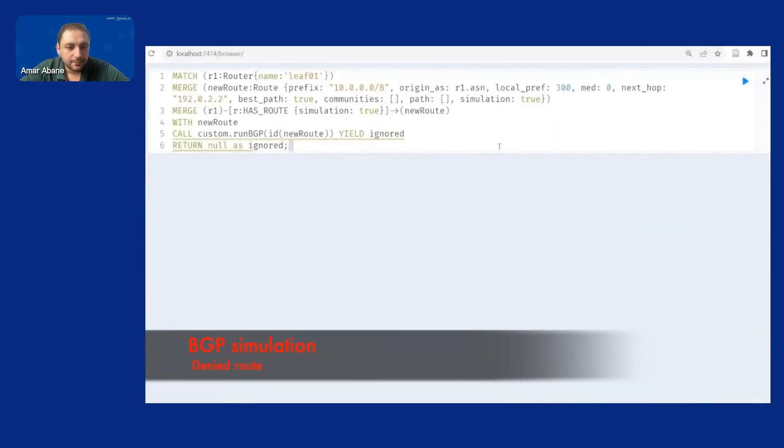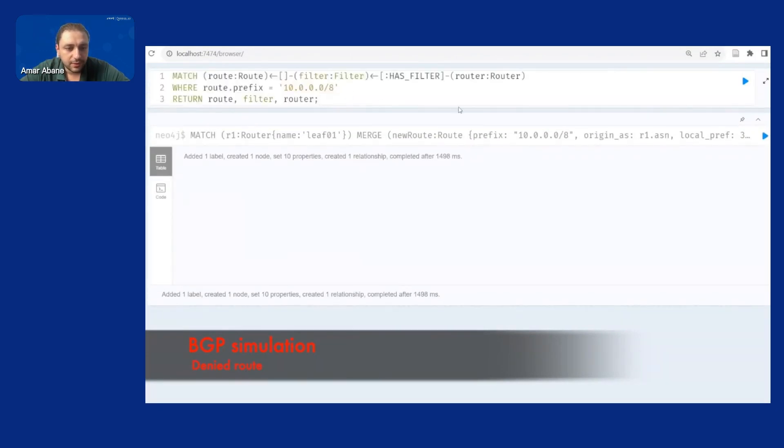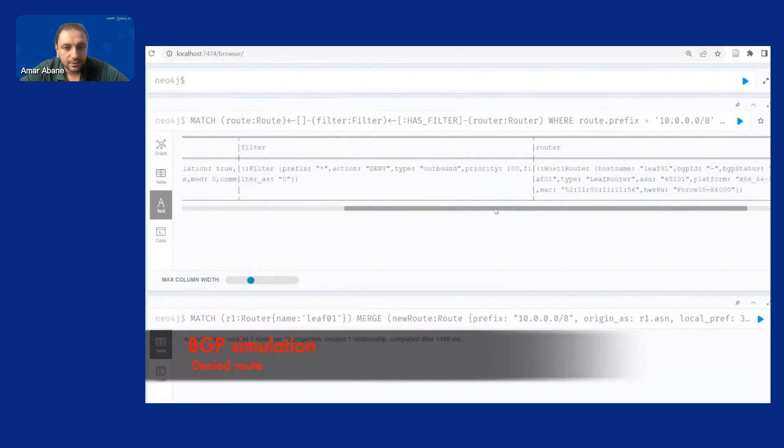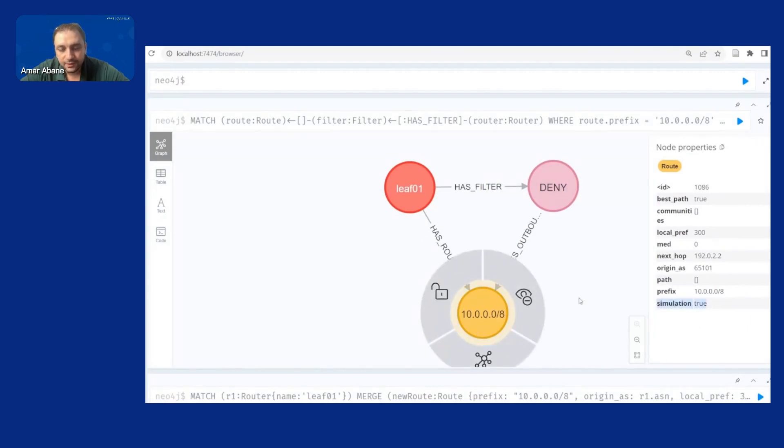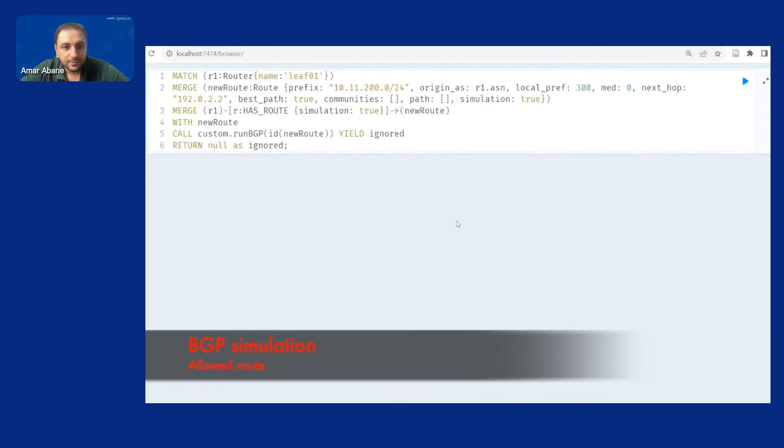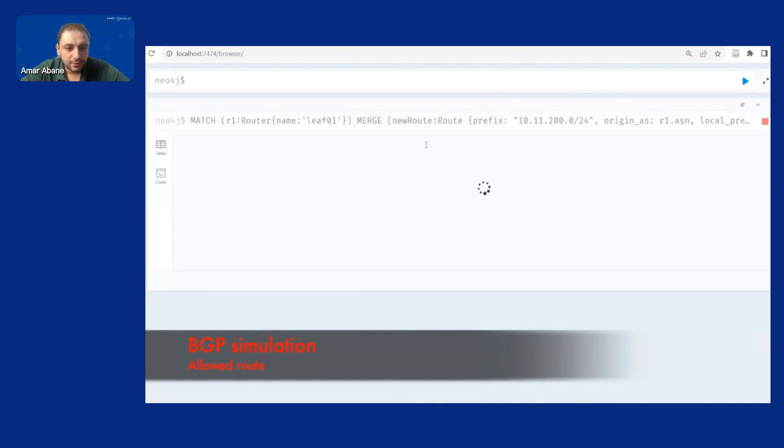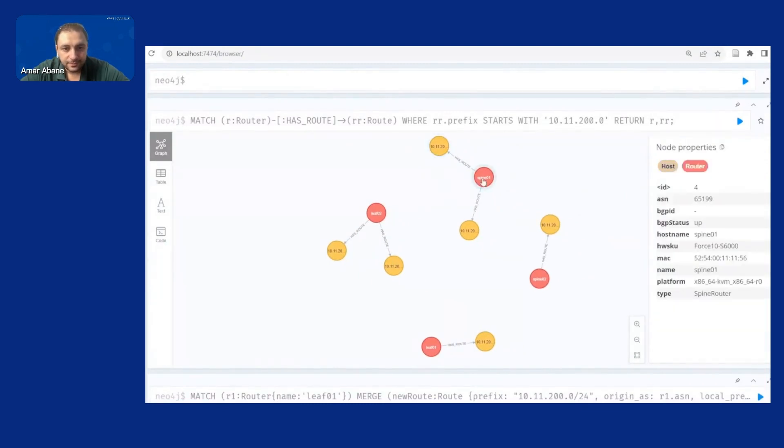So this is the BGP route propagation it's a simplified version here we show a denied route so route that is blocked by the filter and we can see exactly the filter that has blocked the route. This is the same BGP propagation for a route that's allowed so it will be propagated so these are implemented through Cypher procedures so we see the routes here are installed in the neighbor routers with the usual BGP information.